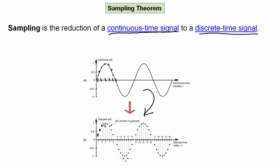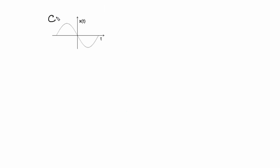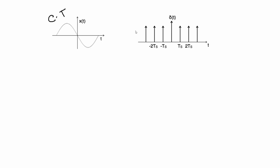The continuous time signal and the discrete time signal will be compared. The question is: what is the difference between the continuous time signal and the discrete time signal? That means the different types of amplitude will be compared. This is the continuous time signal, and this is the impulse train.